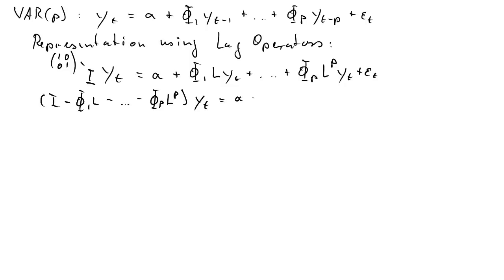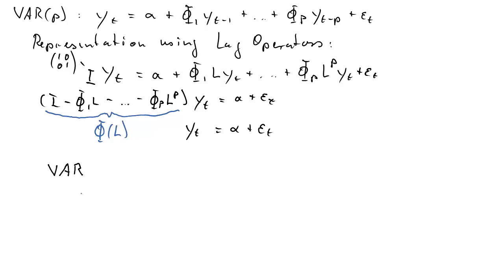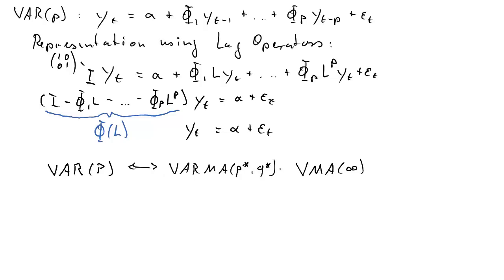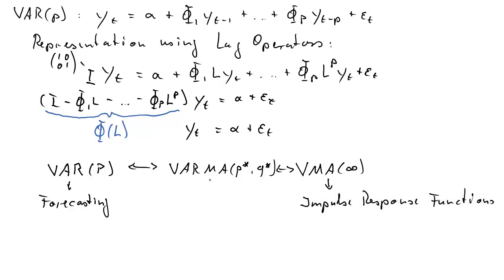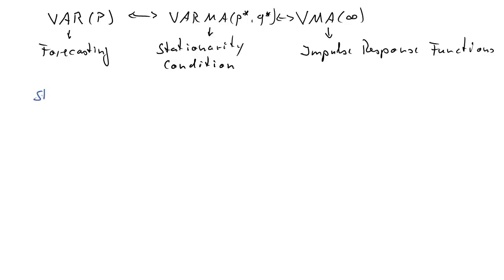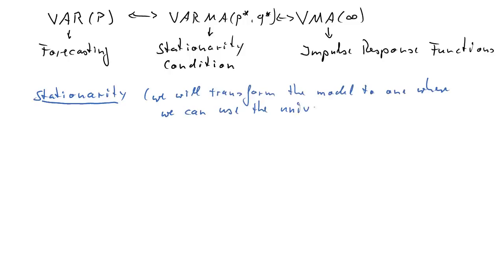We can bring all the terms in yt to the left-hand side and factor out yt, giving us the term in parenthesis: the lag polynomial phi(L) times yt equals alpha plus epsilon t. Now in the univariate case you learned you can represent an AR(P) as an MA infinity, and we can do exactly the same in the vector process. We can also represent it as a VARMA process with certain lags P* and Q. The VAR is used for forecasting, the VMA for impulse response functions, and the VARMA is very useful to derive stationarity conditions.